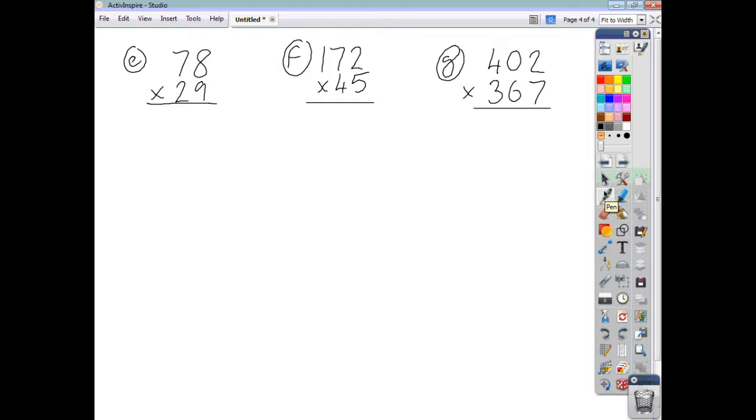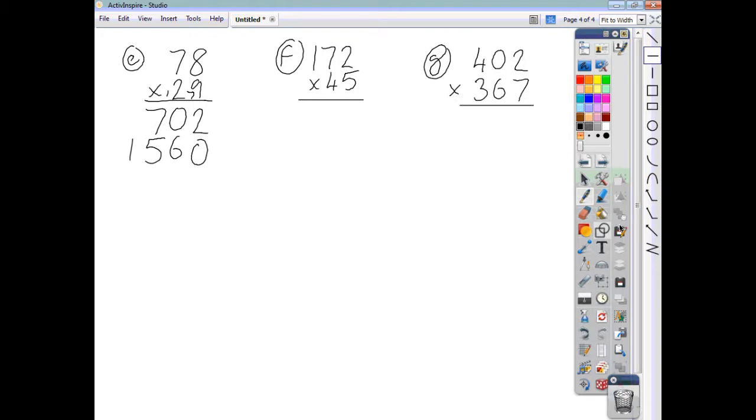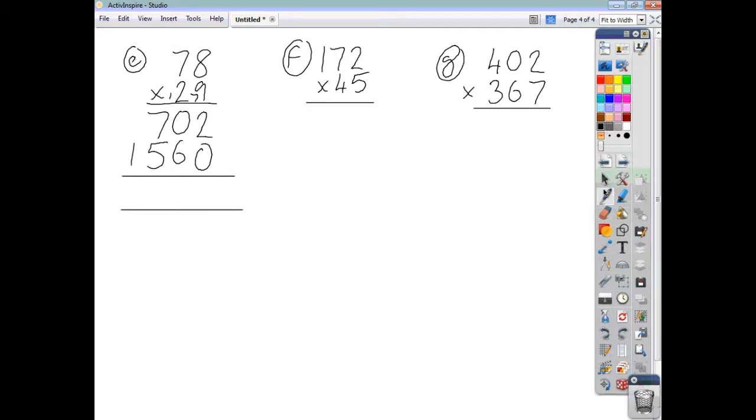Alright, so let's run through them. 9 eights, 72. 9 sevens, 63. Add the 7, you get 70. Write a 0. 2 eights, 16. 2 sevens, 14. Add the 1, 15. Adding up the two lines of working, we end up with 2 add 0 is 2, 6 add 0 is 6, 7 add 5 is 12, 1 and 1, 2. There's your answer. 2,262.